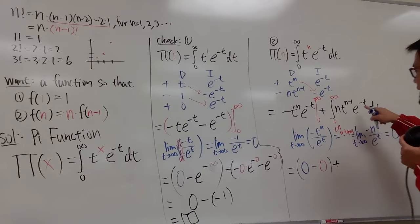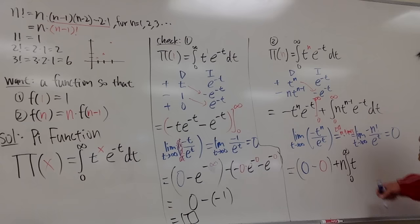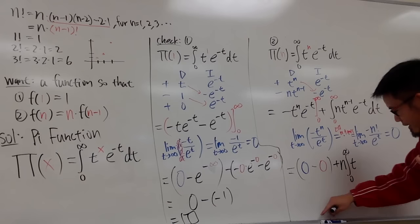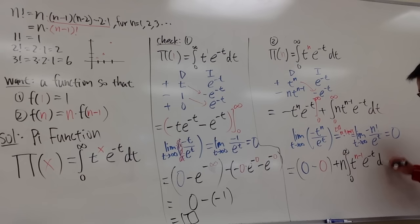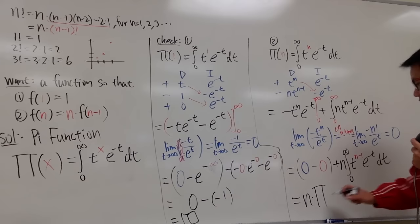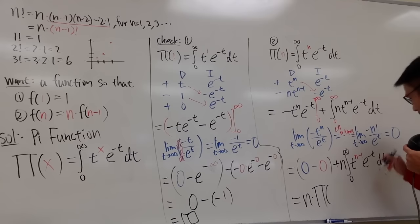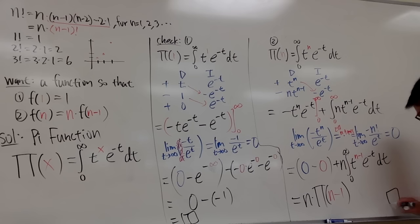What remains is n times the integral from 0 to infinity of t to the (n minus 1) times e to the negative t, dt. Since n is just a constant in the t world, I bring it to the front. And that integral is exactly Pi(n minus 1) — plugging n minus 1 into the pi function. So we have Pi(n) = n times Pi(n minus 1), which is exactly the second property.